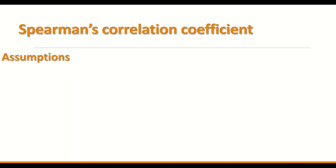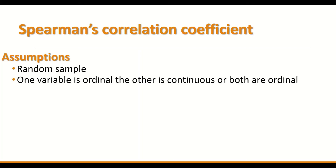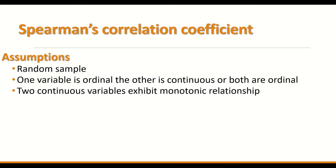To perform the test, the data must fulfill certain requirements and assumptions. The data must be random. One variable should be ordinal and the other continuous, or both can be ordinal, or two variables that are continuous but exhibit a monotonic relationship.